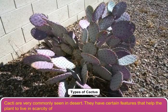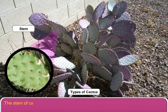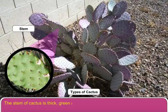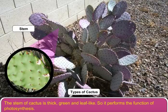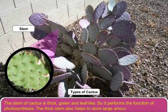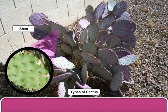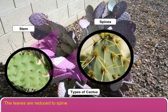The stem of cactus is thick, green and leaf-like, so it performs the function of photosynthesis. The thick stem also helps to store a large amount of water. The leaves are reduced to spines.